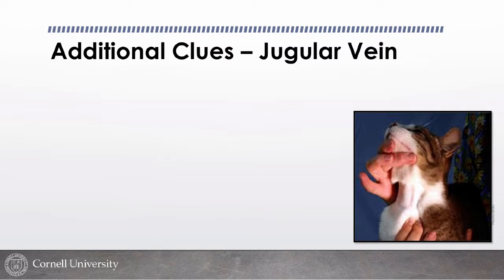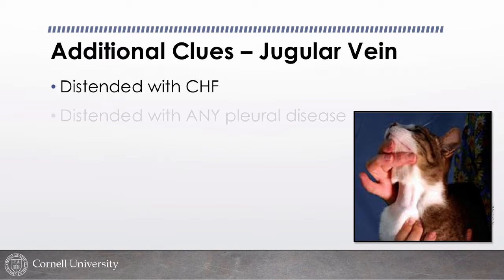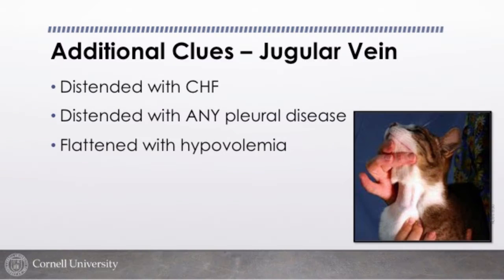The jugular vein assessment is crude but gives you additional evidence. Distended jugulars suggest cardiogenic shock with CHF; flat jugulars argue against it, although jugular veins can also be distended with pneumothorax or pleural effusion from any source. So it's not a slam dunk, but flat jugulars are meaningful. Also keep in mind that cats in heart failure may not be as reliably tachycardic as dogs — cats don't always follow the textbook, and heart rates of 180–220 are seen but not universal.